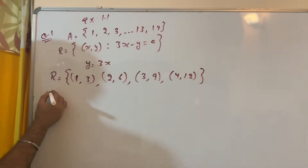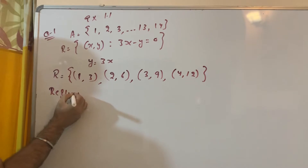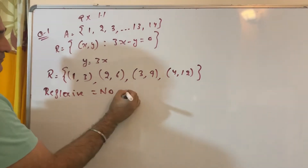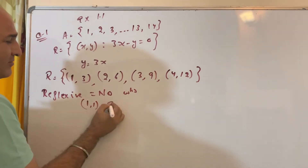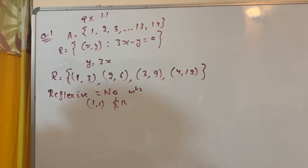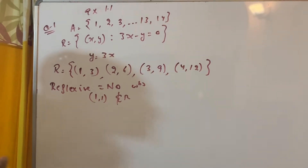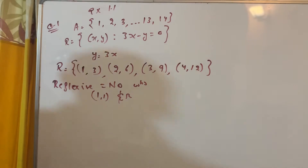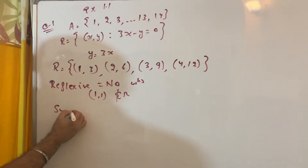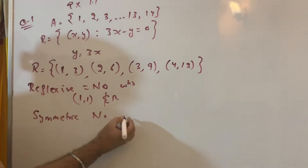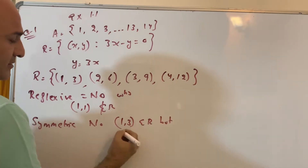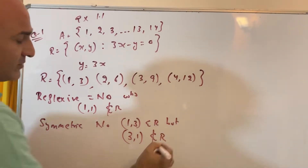Now check for reflexive — the answer is no. Why? Because (1,1) does not belong to R, or similarly (2,2). Any one example is sufficient to disprove it. Now check symmetric — again no. Why? Because (1,3) belongs to R, but (3,1) does not belong to R.